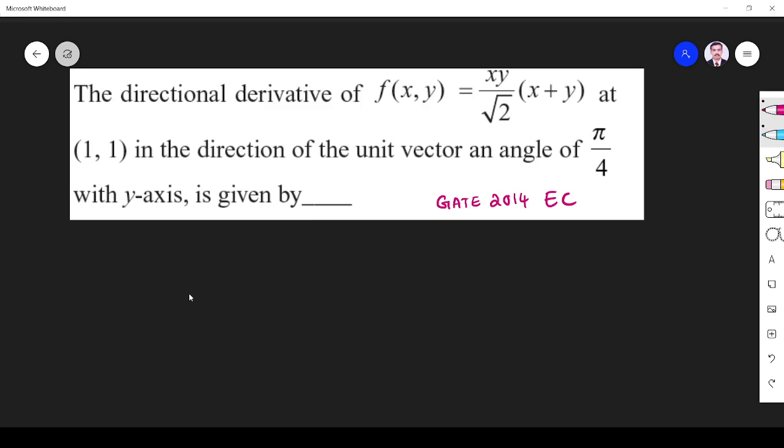So what we have to find is the directional derivative. The directional derivative is given by the gradient of the scalar function taking dot product with the unit vector. So here they have given f(x,y), let me write it in a different way: (1/√2)(x²y + xy²).